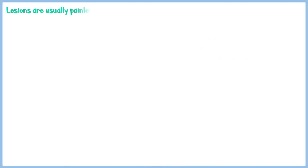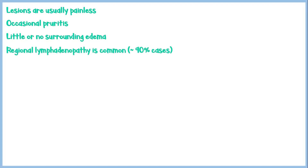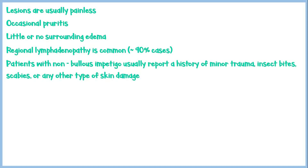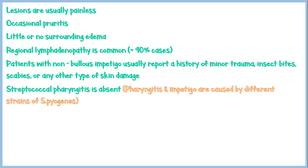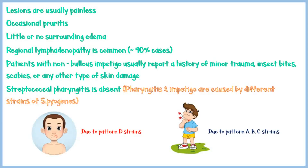The lesions in non-bullous impetigo are usually painless, and some patients may experience occasional pruritus. There is little or no surrounding edema. Regional lymphadenopathy is common. Patients usually report a history of minor trauma, insect bites, scabies, or any other type of skin disease. Notably, streptococcal pharyngitis is absent in impetigo, because pharyngitis and impetigo are caused by different strains of Streptococcus pyogenes — impetigo is due to pattern D strains, and pharyngitis is due to pattern A, B, and C strains.